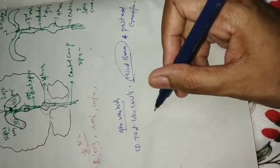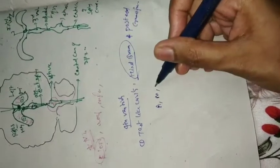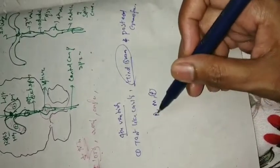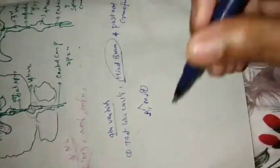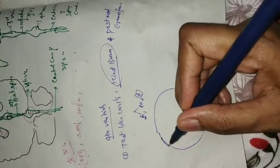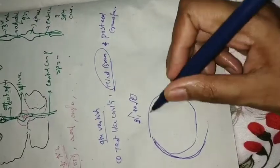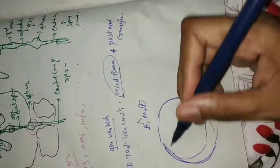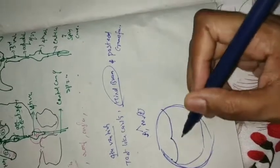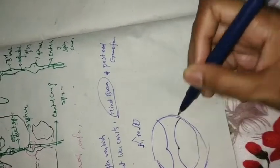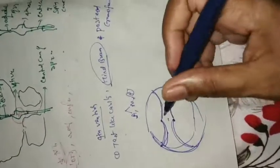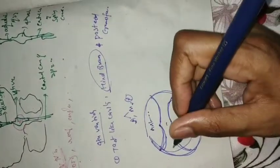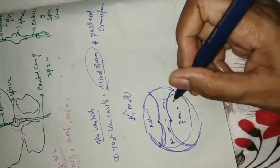As you have seen in the base of the skull, it has three fossae — anterior, middle, and posterior. Between anterior and middle you will have the sphenoidal wings — lesser and greater sphenoidal wings. So this is the anterior cranial fossa, this is the middle cranial fossa, and this is the posterior cranial fossa. The hindbrain is here, and so in the posterior cranial fossa you will see the fourth ventricle.